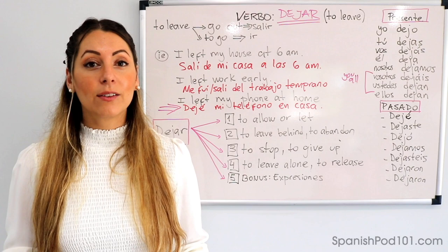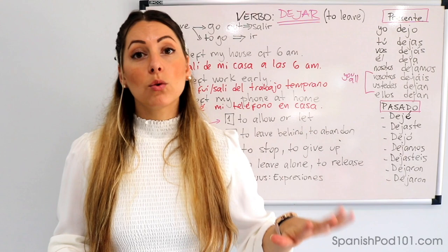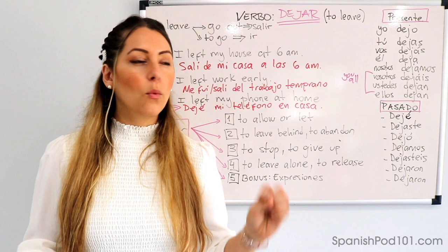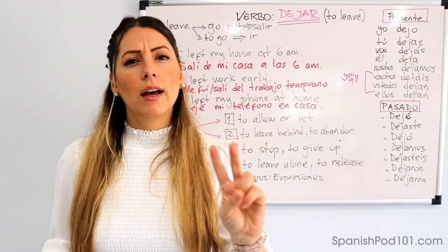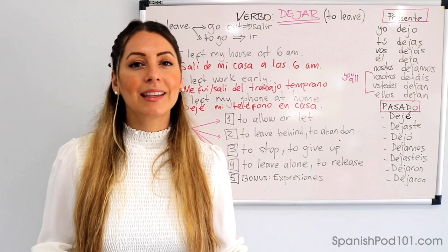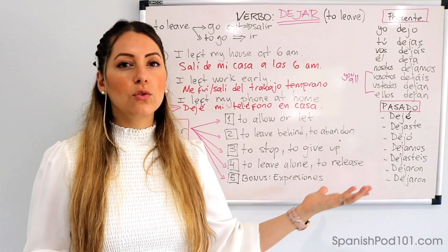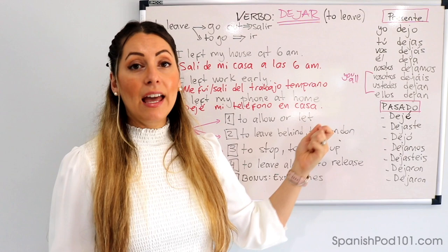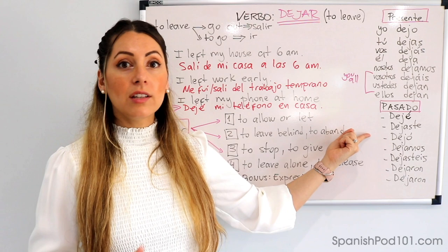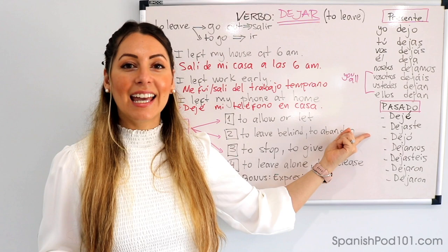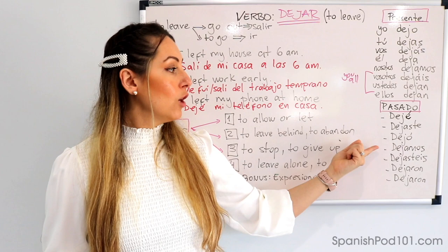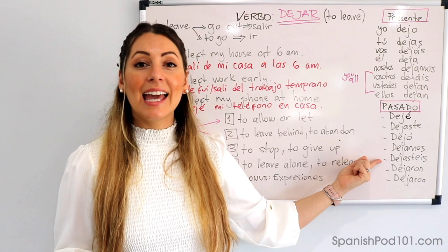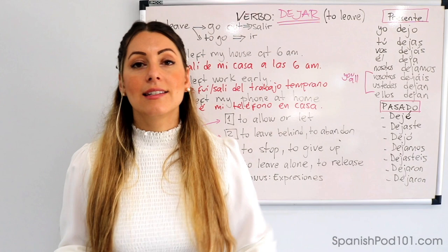Perfecto. Vamos rápido a ver el pasado. El pasado vamos a usar el pretérito para hablar de acciones pasadas. Remember, we have two different simple past tenses in Spanish — the pretérito and the imperfecto. Most of the time with these examples we're going to use the pretérito. Yo dejé. Tú, vos dejaste. Él, ella, usted dejó. Nosotros dejamos. Vosotros dejasteis. Ustedes dejaron. Ellos, ellas dejaron.